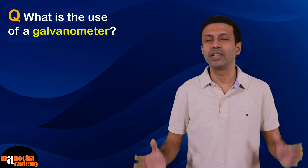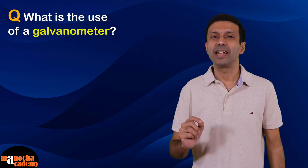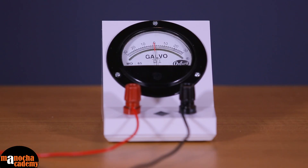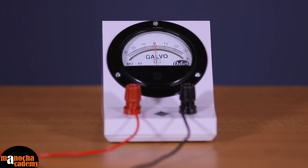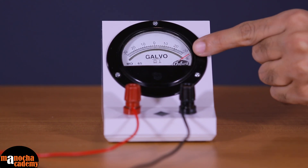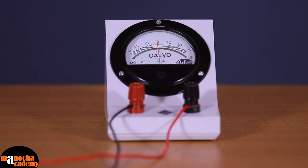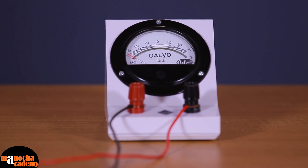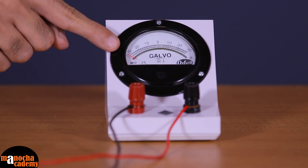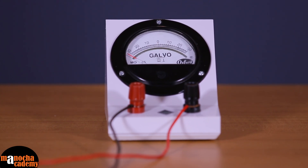A galvanometer is used to detect the presence and direction of electric current. When there is no current, the galvanometer needle points to the zero mark. When electric current passes through it, there is deflection in the needle — it deflects to the right side of zero, indicating the flow of current. To reverse the direction of current, if we switch the wires on the galvanometer, the needle deflects in the opposite direction, to the left side of zero.